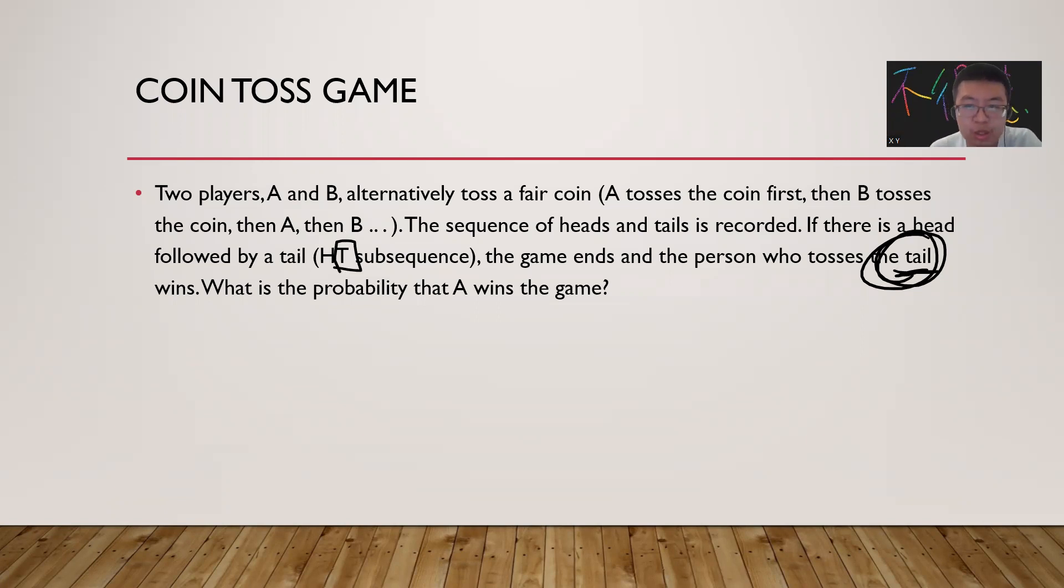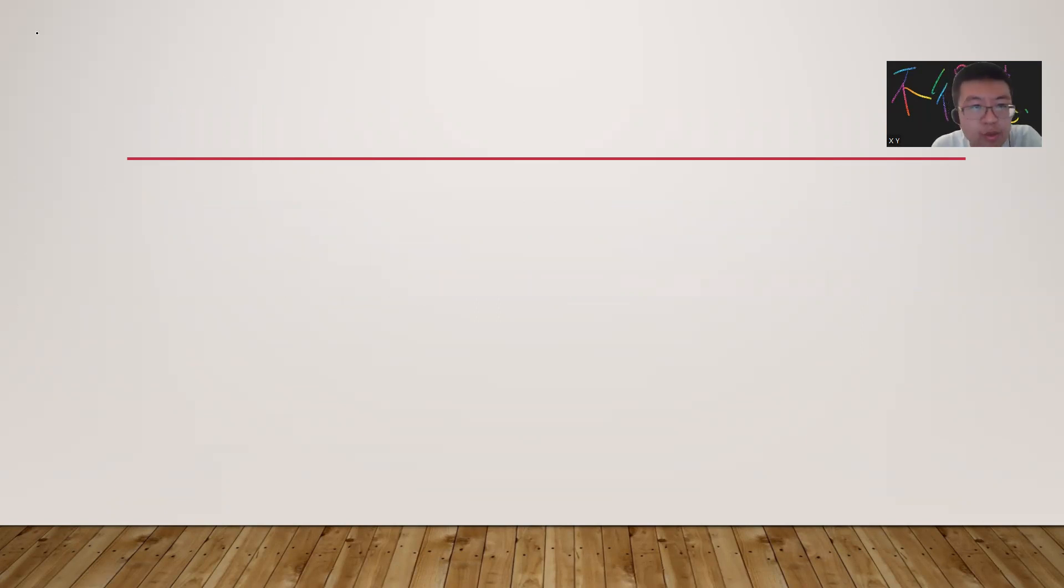What is the probability A wins? So denote P(A) to be the probability A wins, P(B) to be the probability B wins. So P(B) equals one minus P(A).